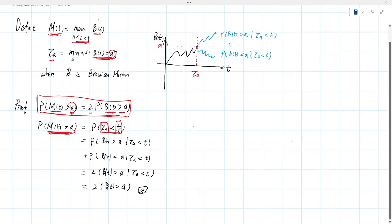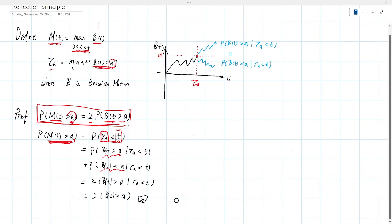And for this, A can be divided into two scenarios. One scenario is BT greater than A. Another scenario is BT less than A. So those two scenarios can be represented here.